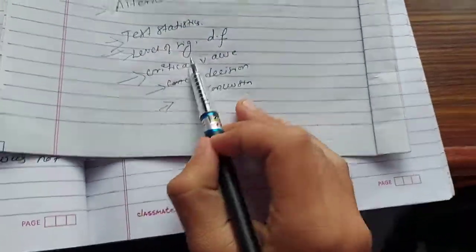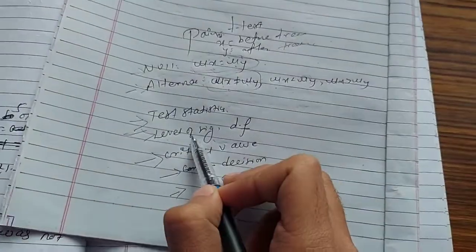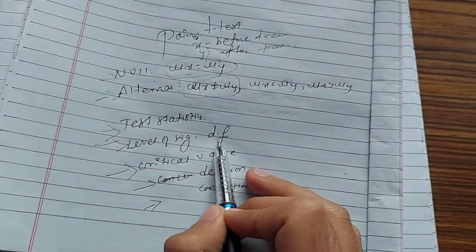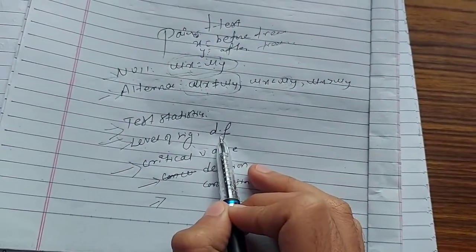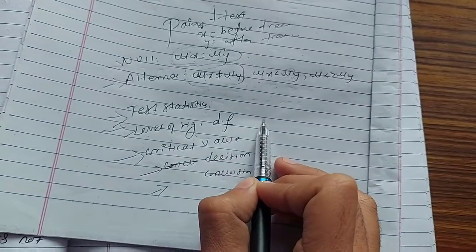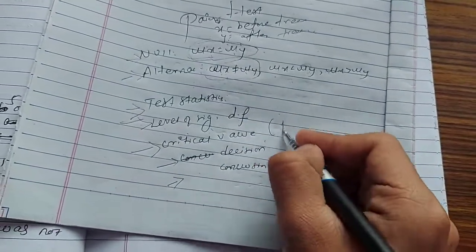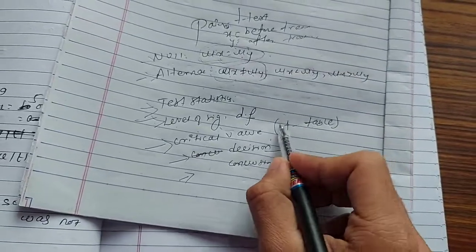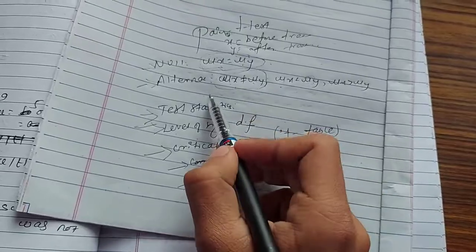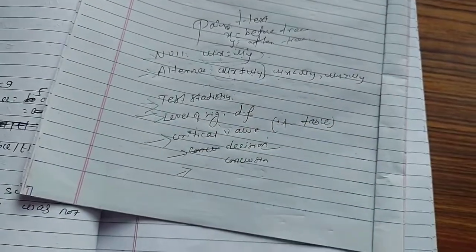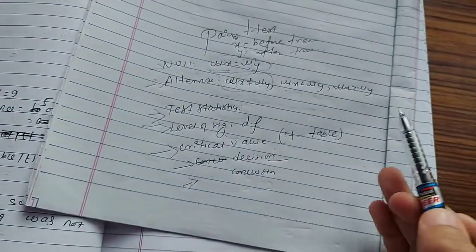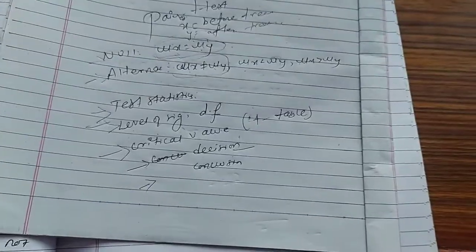A simple example. The level of significance. Five persons. Degree of freedom is n minus 1, number of observations minus 1. Critical value from the t-table. Calculated value if it is greater than the critical value then we reject null hypothesis.